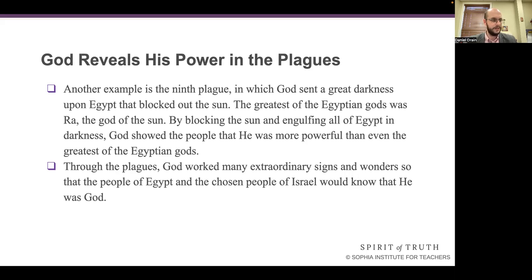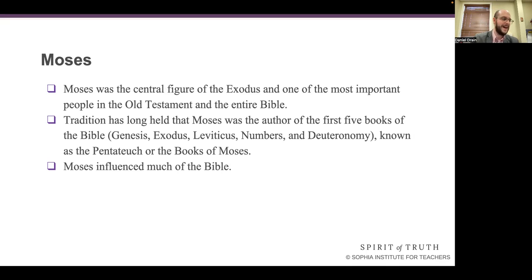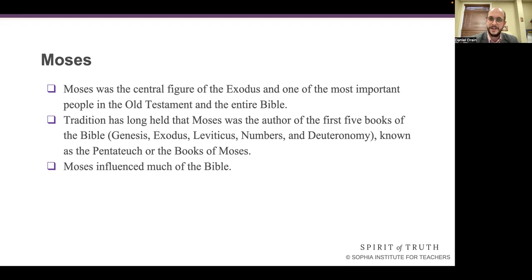The next page in your workbook is page 147, which has a work of art called Moses Smashing the Tablets of the Law. This is the painting of Moses, who was the central figure of the Exodus and one of the most important people in the Old Testament and the entire Bible. Tradition has long held that Moses was the author of the first five books of the Bible — Genesis, Exodus, Leviticus, Numbers, and Deuteronomy — known as the Pentateuch, or the books of Moses. In the painting, Moses is holding the stone tablets of the Ten Commandments and is about to smash them, since after coming down from the mountain he found the Israelites worshiping the golden calf.